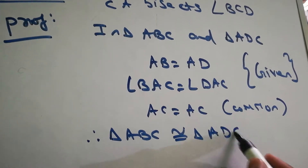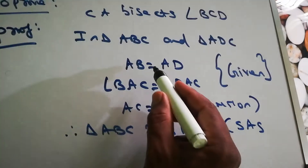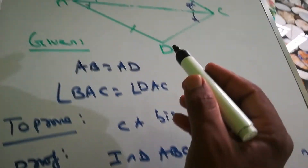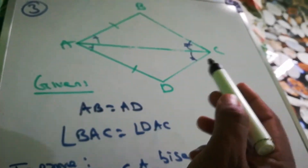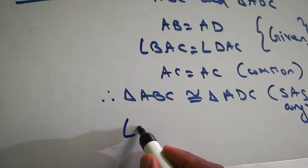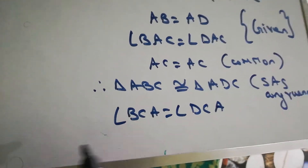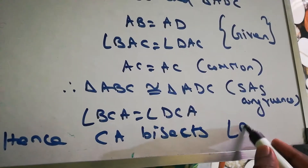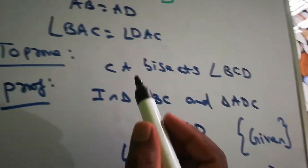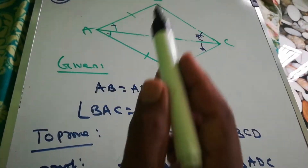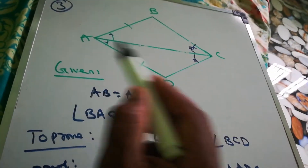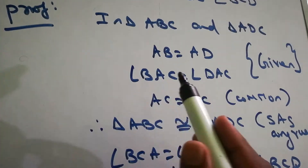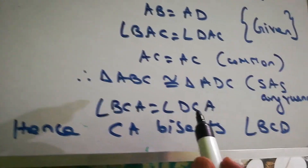Therefore, triangle ABC is congruent to triangle ADC by side-angle-side congruence. Since the triangles are congruent, angle BCA equals angle DCA. Hence, CA bisects angle BCD.